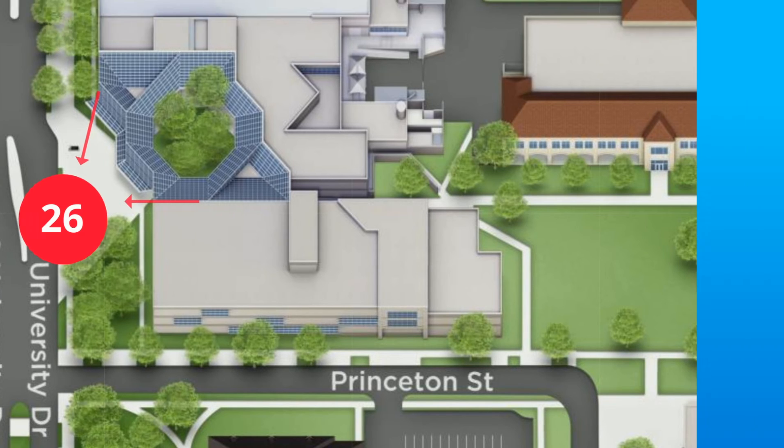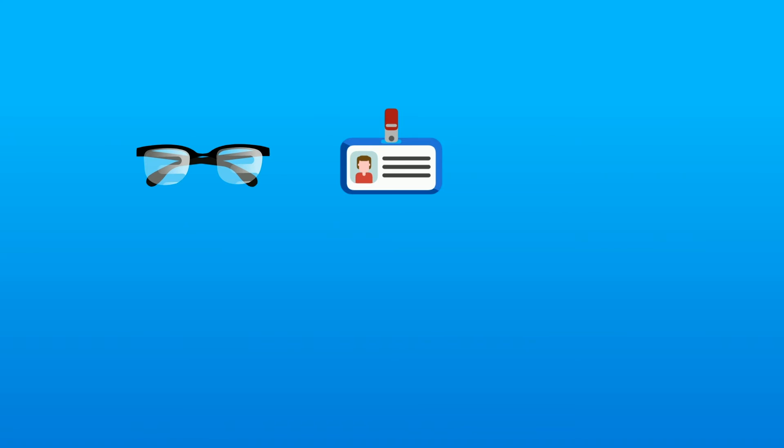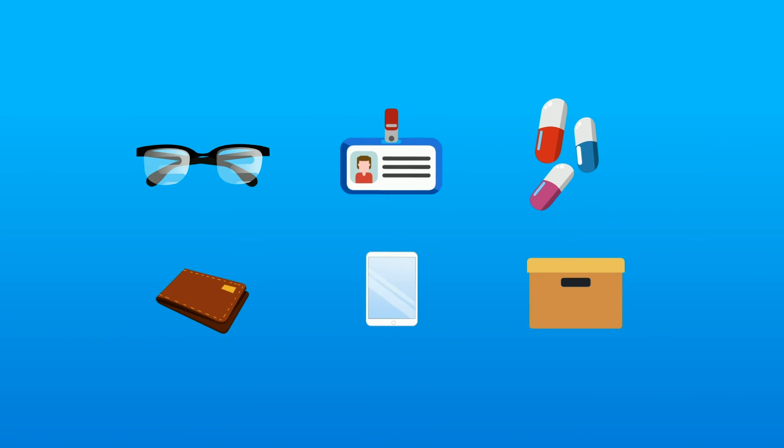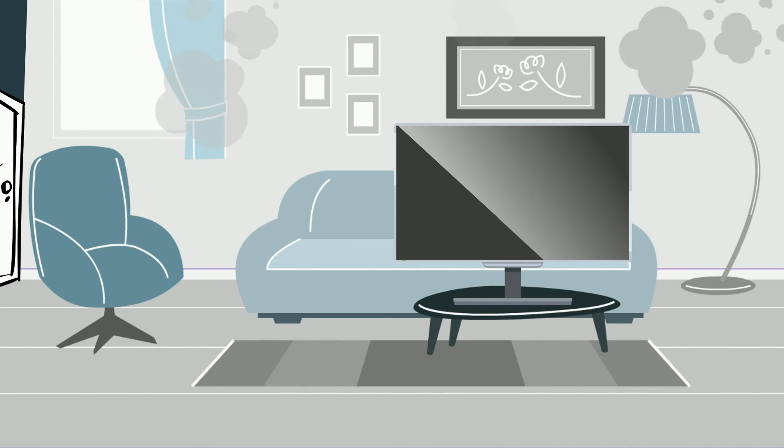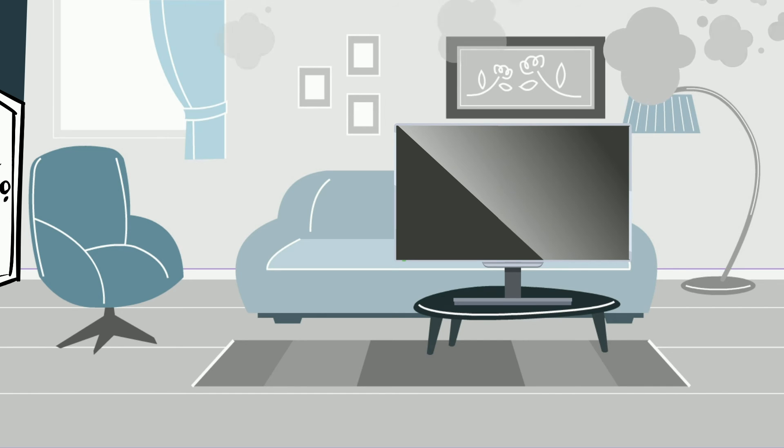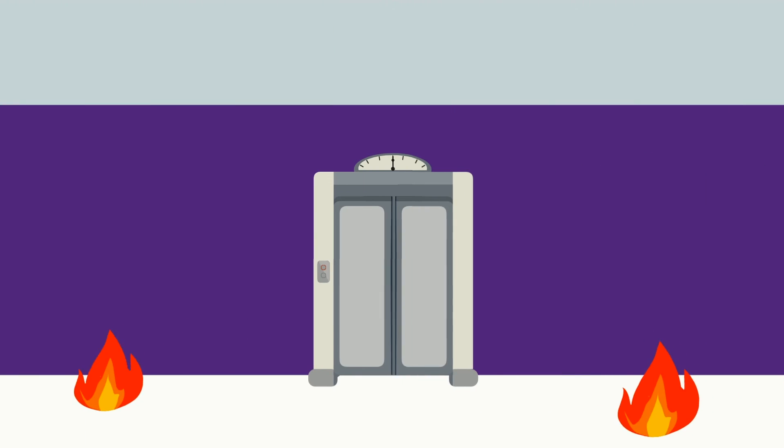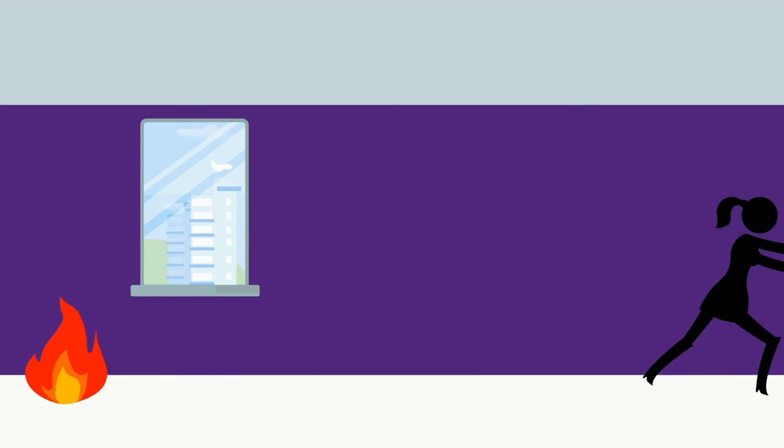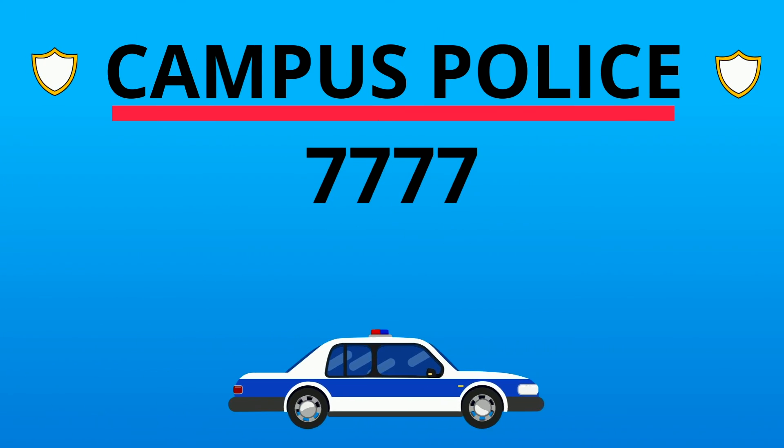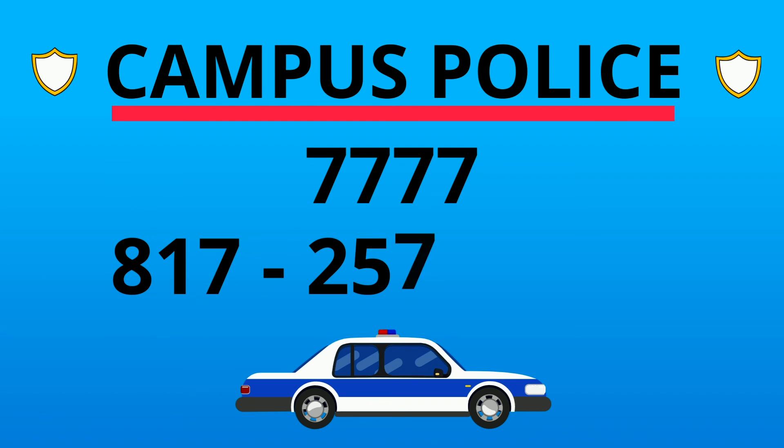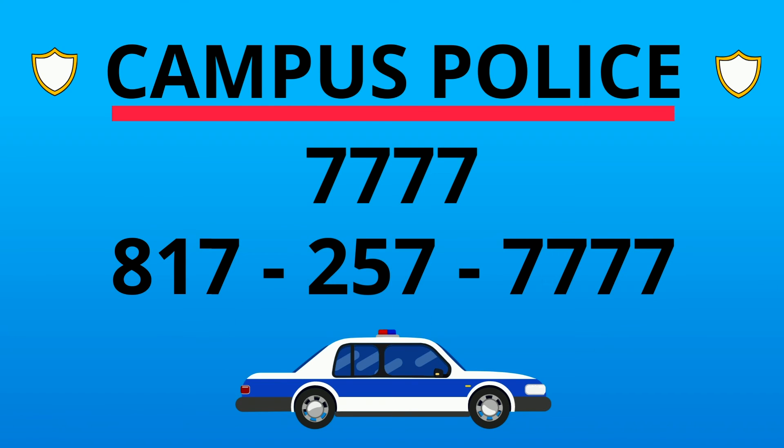Take only essentials with you. Eyeglasses, ID, medications, wallet, and phone. Do not pack belongings. If you have time, turn off potentially hazardous equipment and close the door to the room as you exit. Leave the building by the nearest, safest exit. Avoid using the elevator. If you are able, ask and provide help to those who need assistance in evacuating the building. Remember to meet at the designated rally point. And if you need special assistance evacuating the building, contact campus police at the extension 7777 or 817-257-7777.